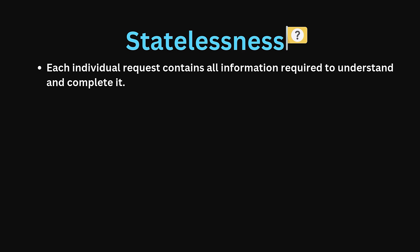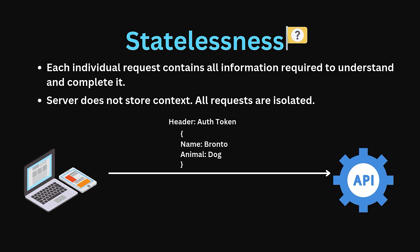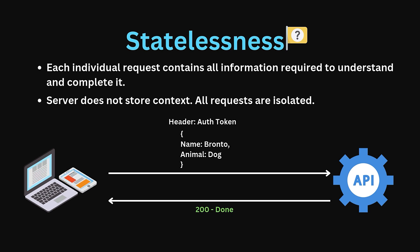Next, statelessness. Each request from the client to the server must contain all information needed to understand and complete the request. The server doesn't store client context between requests, which simplifies server design and improves scalability — each request is isolated. In our pet example, if the client wants to register their dog Bronto, we would send across all required information at once, including authentication tokens and all of Bronto's information in one go. The server doesn't remember previous requests, so when doing any single operation, you must send all information for that operation at once.